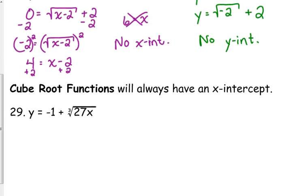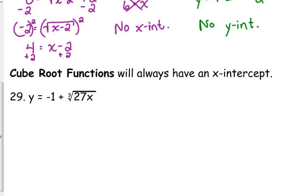Cube root functions, however, will always have x-intercepts and y-intercepts. They will always cross both those axes. There's not an issue with that, but that's also because cube root functions have domains and ranges of all real numbers. So let's go over finding the x-intercept here. Set the function equal to 0 and solve for x.